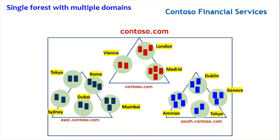This model is called single forest with multiple domains. Some companies go with this model — they have one forest but more than one domain. It can be two, three, or four domains, but there is more than one domain in the forest.